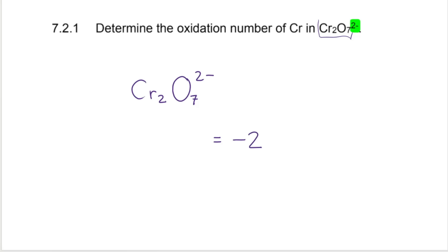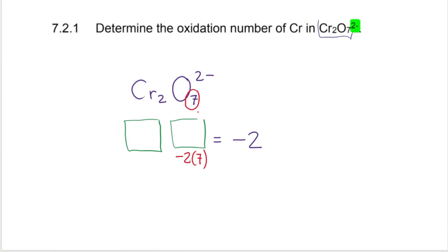I'll create a box for oxygen and a box for chromium, Cr. We know that the rule says oxygen, when inside a compound like this, has an oxidation number of negative 2. We also know there are 7 of them in this compound, so negative 2 times 7 equals negative 14 inside the oxygen box. Please note that the oxidation number of oxygen is still negative 2 — there are just 7 of them, which makes this section of the ion have an overall value of negative 14.